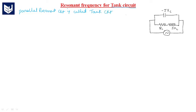See here, this is the tank circuit. We are calling this a tank circuit because energy is stored in the form of a magnetic field here, and energy is stored in the form of an electric field here. So as it is storing electrical energy in the form of magnetic and electric fields, we are calling this circuit a tank circuit.